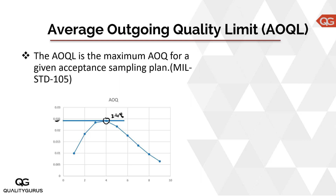The problem is that if we get a bad quality lot, we need to re-inspect the whole lot and replace bad items with new ones. That is why the plan gives good outgoing quality even at a 9% defective rate — because you screen the whole lot. However, higher defective rate lots will lead to more inspection.